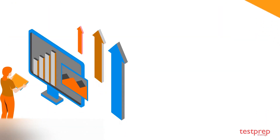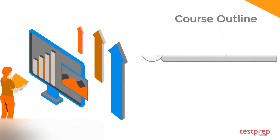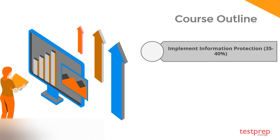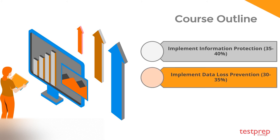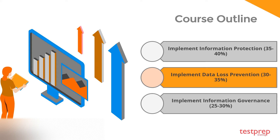Course Outline: 1. Implement Information Protection, which comprises 35 to 40% weightage in the exam. 2. Implement Data Loss Prevention, which comprises 30 to 35% weightage in the exam. 3. Implement Information Governance, which comprises 25 to 30% weightage in the exam.